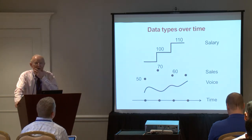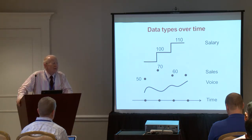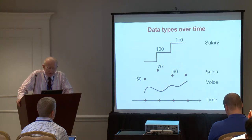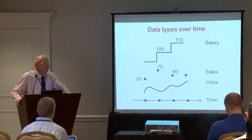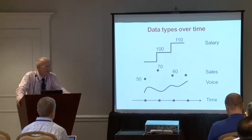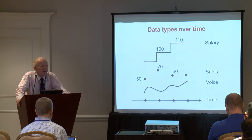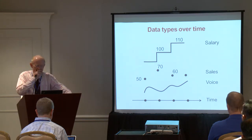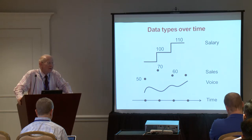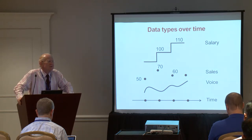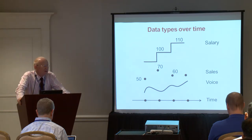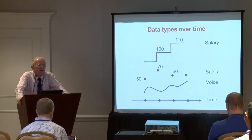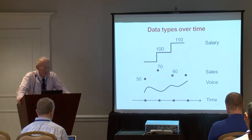What data types do we deal with in a temporal database? In reality we can identify three types. The first is stepwise constant — for example, salary, which is valid for a certain period and changes abruptly. The second type is data valid at a time instance, like sales. The third type is analog continuous data, like voice. A temporal database must deal with all of them.